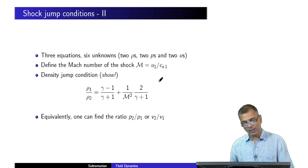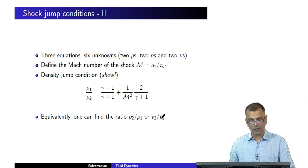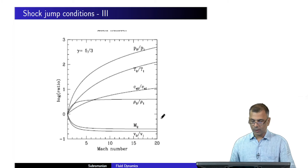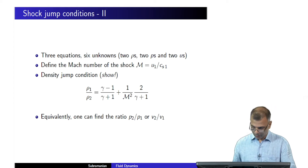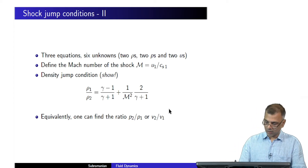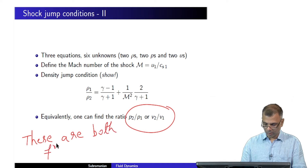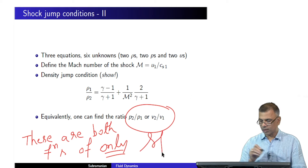Equivalently, once you have the density jump condition, you can immediately find the pressure jump condition and the jump in normal velocity. All of these — density, velocity, pressure — are functions of only the Mach number M. The Mach number is the only thing that matters.